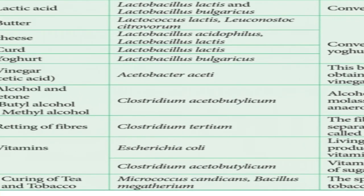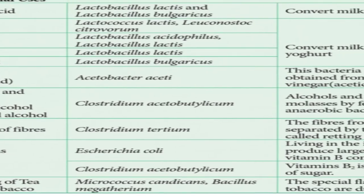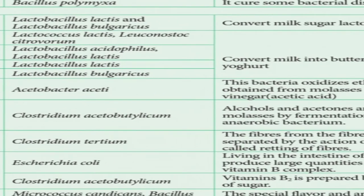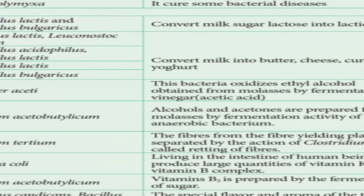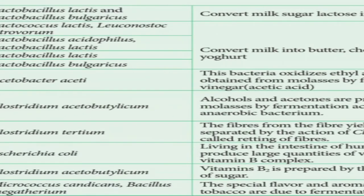Cheese is produced using Lactobacillus acidophilus and Lactobacillus lactis. Curd is produced by Lactobacillus lactis. Yogurt is produced by Lactobacillus bulgaricus. These bacteria convert milk into butter, cheese, curd, and yogurt.